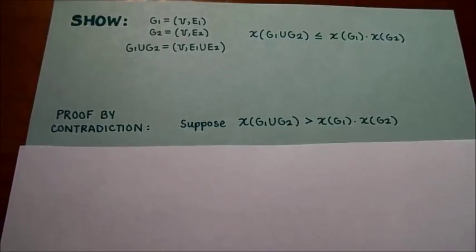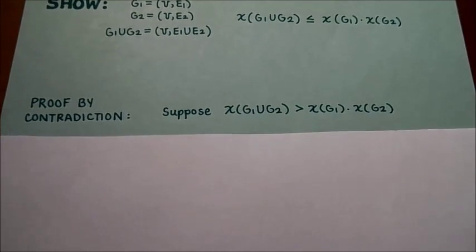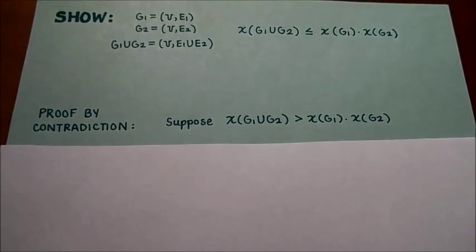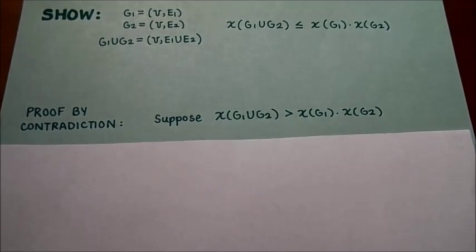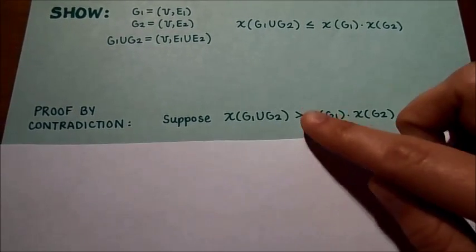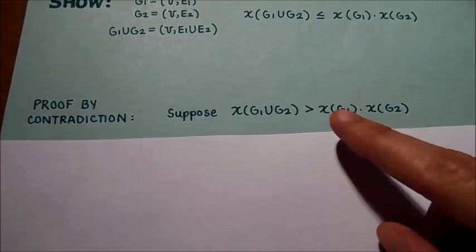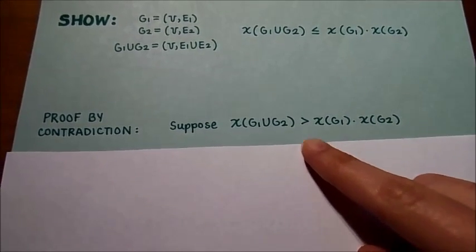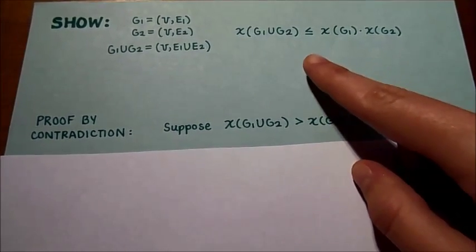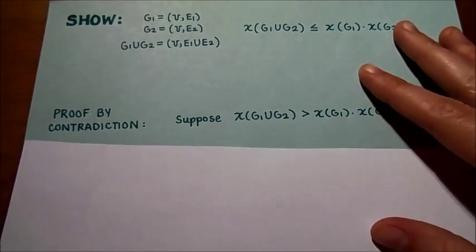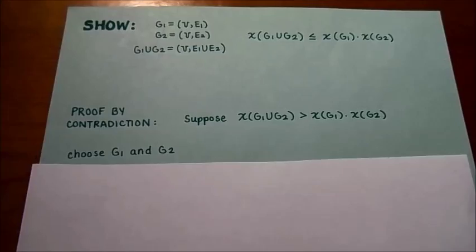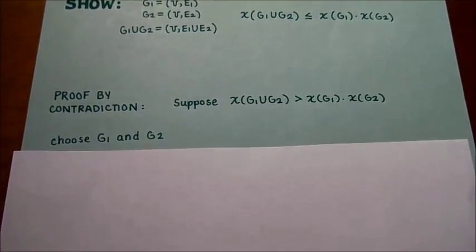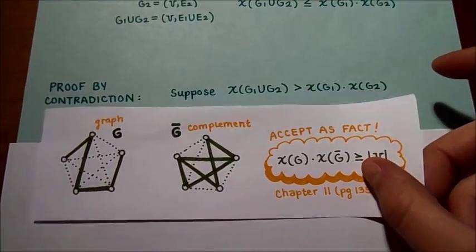For our proof, we can use proof by contradiction. Let's suppose that the minimum coloring of the union is actually greater than the product of the minimum colors of the other two graphs — exactly opposite of what we want to show. If we can find a contradiction, then we can say it's not greater and thus it must be less than or equal to. Before choosing G1 and G2, let's look at an interesting result from chapter 11.